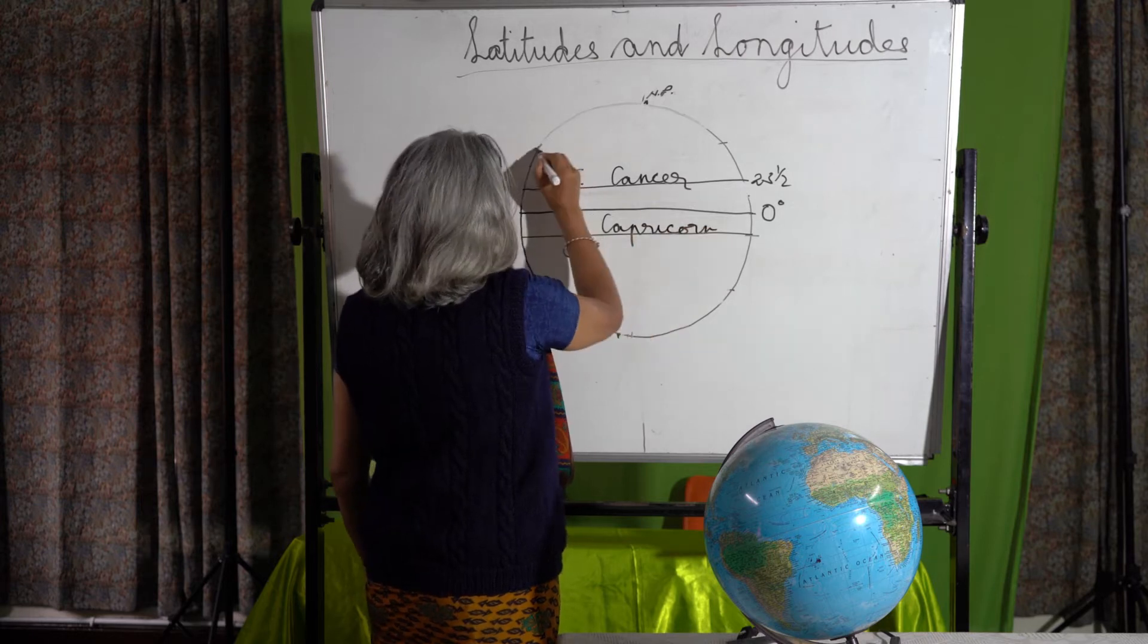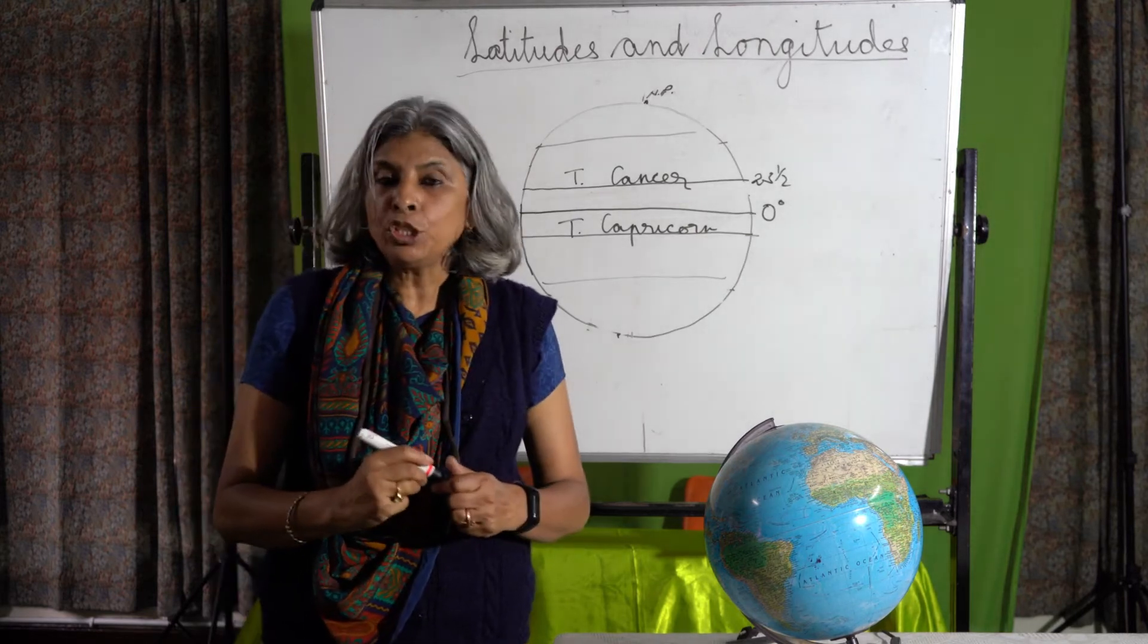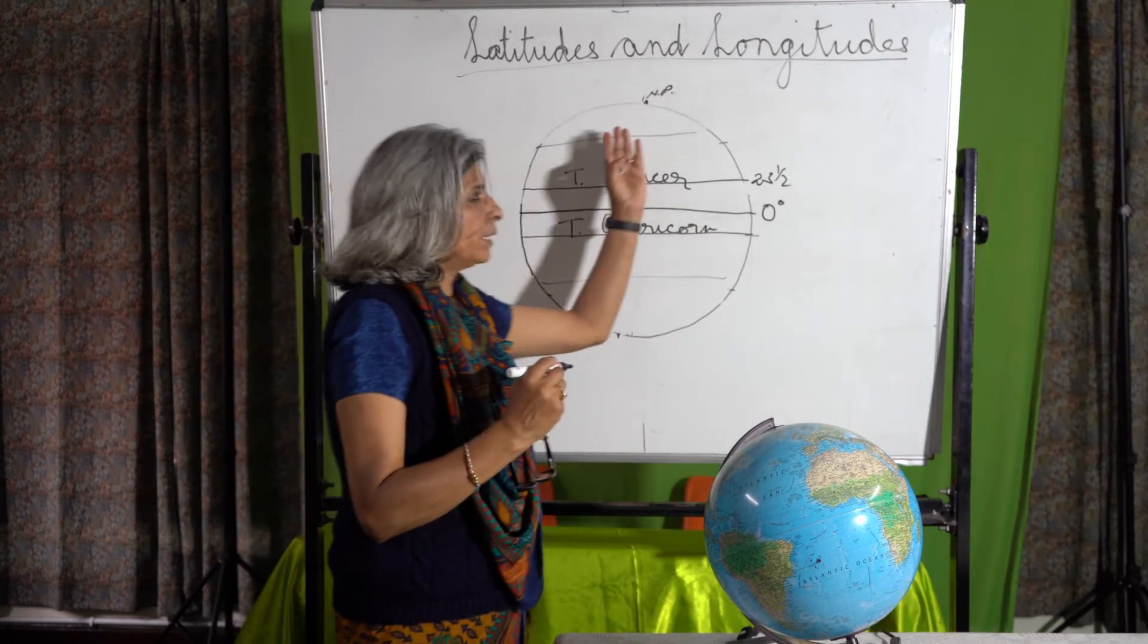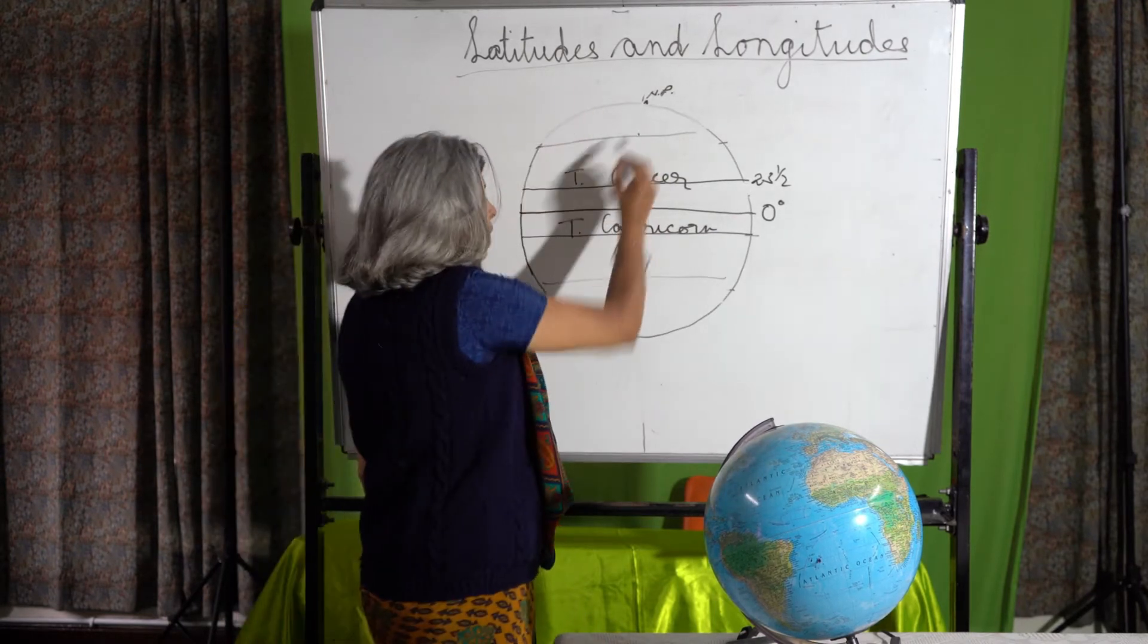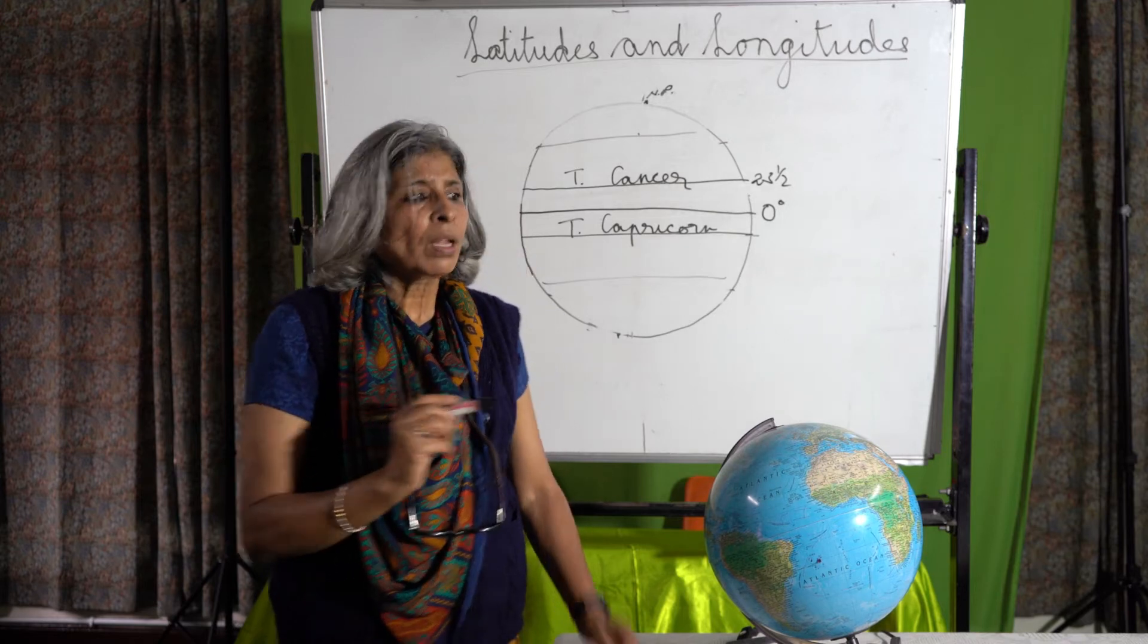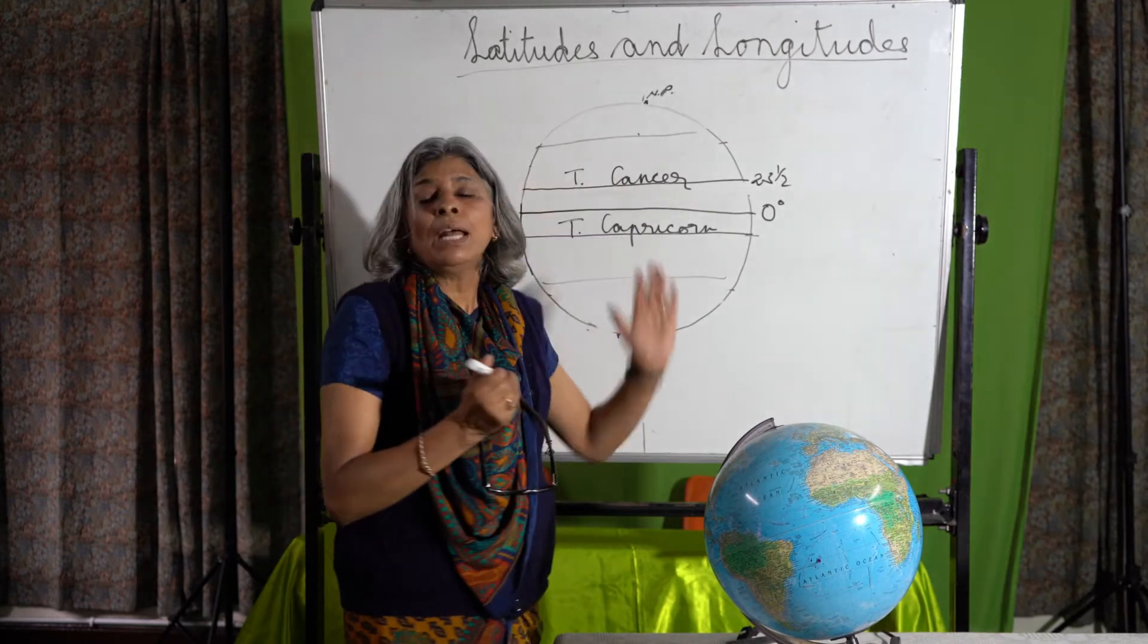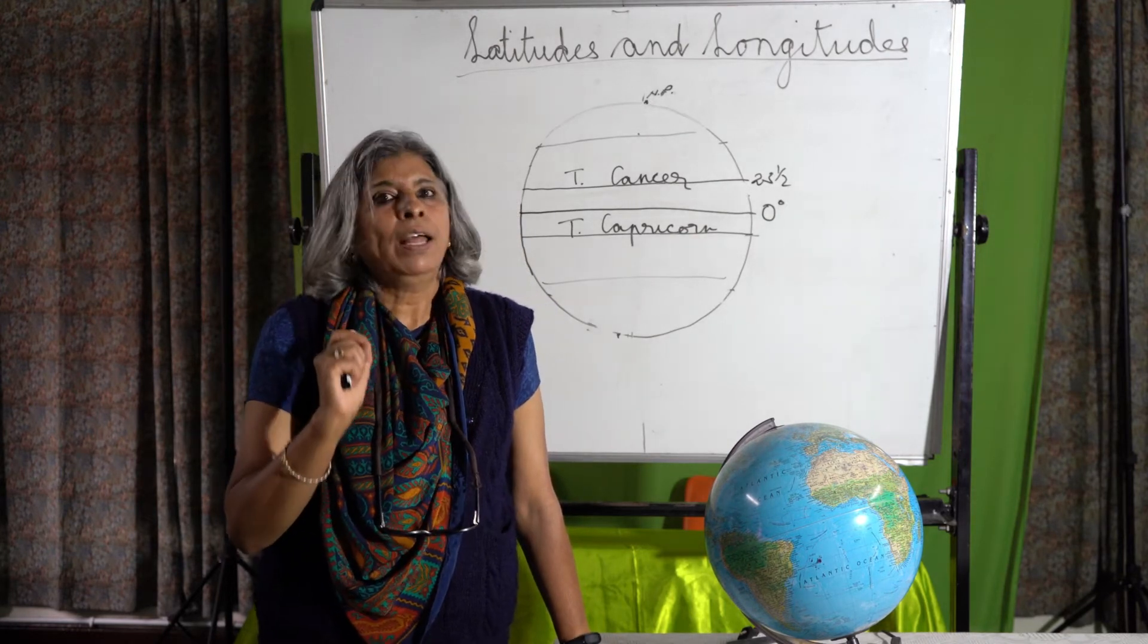Then we have the 66.5 degrees lines of latitude north and south of the equator, which are the Arctic Circle to the north and the Antarctic Circle to the south. Besides this, these are the most important lines of latitude. There are 180 lines of latitude.